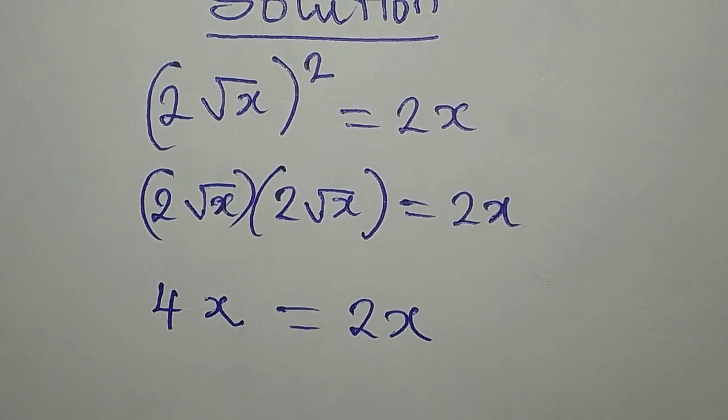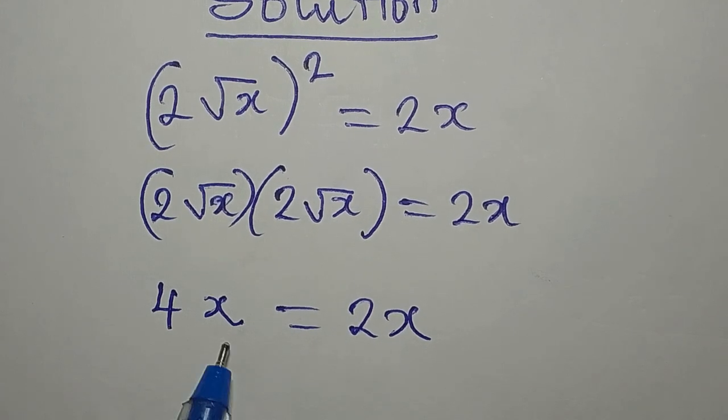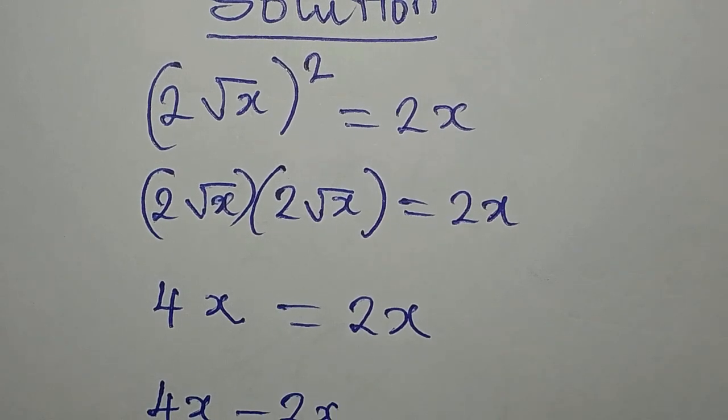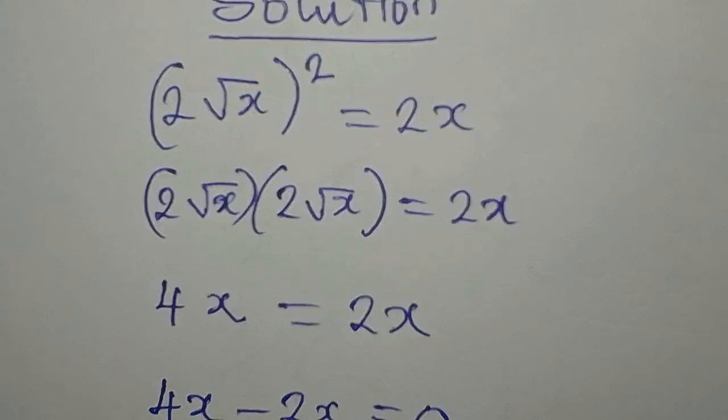So what we'll do is to bring this to the left hand side, so we have 4x minus 2x, and that is now equal to 0.